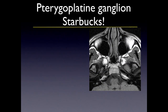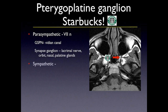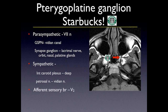On an axial T1 MRI, the pterygopalatine fossa is called the Starbucks of the head and neck — a nice round dot surrounded by fat. It's where the vidian nerve meets branches of the V2 trigeminal nerve. The seventh nerve gives parasympathetics via the GSPN, which hooks up with sympathetics from the deep petrosal nerve. The GSPN synapses and innervates lacrimal glands, orbits, nasal and palatine glands. The afferent sensory branch from V2 also goes into the ganglion, innervating the sensory components of the midface involving the orbits, posterior nasal regions, nasopalatine, and pharynx regions.